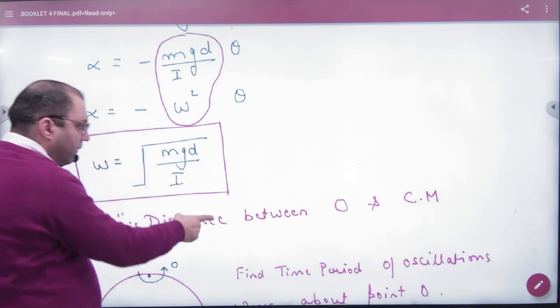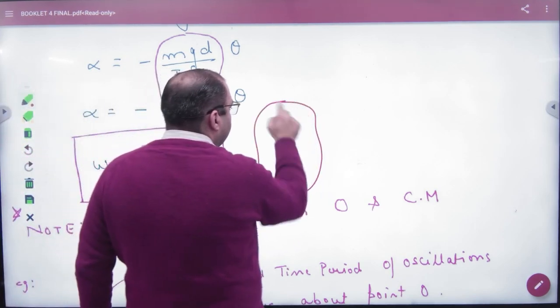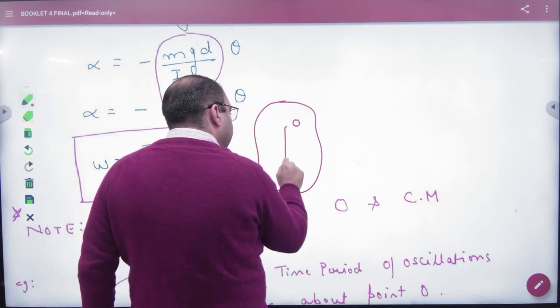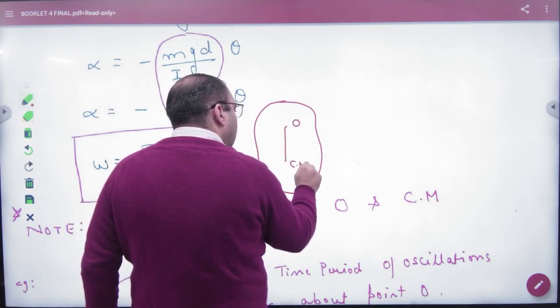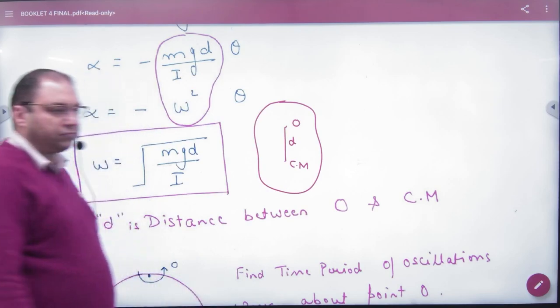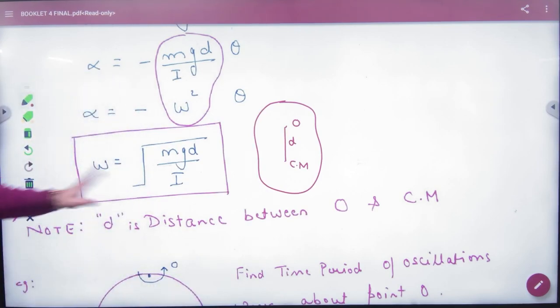Make a diagram. Make an O point, make a center of mass, make a distance of D. So this will be omega.